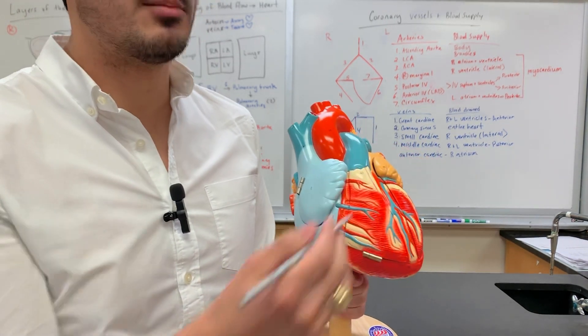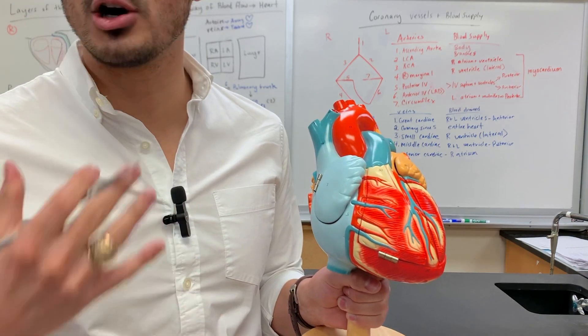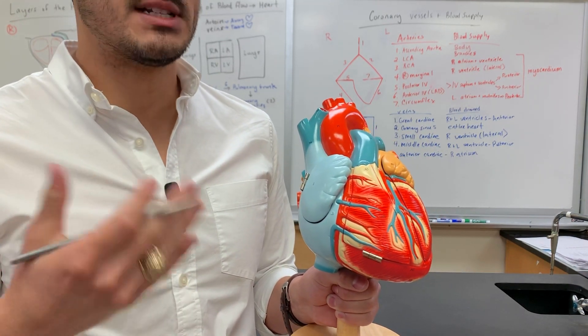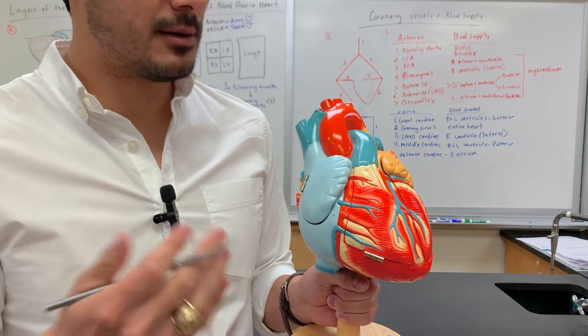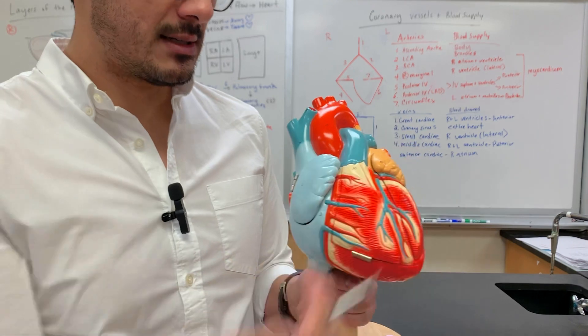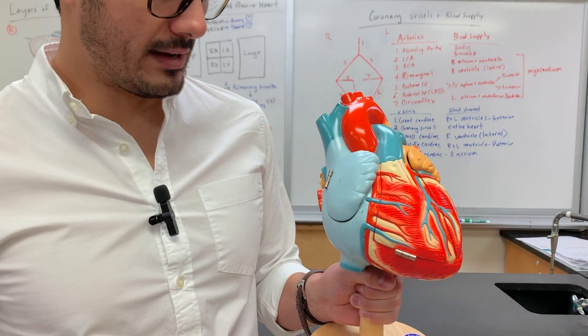These two structures are auricles — auricle means like the ear. This is the right one and then this is the left one.